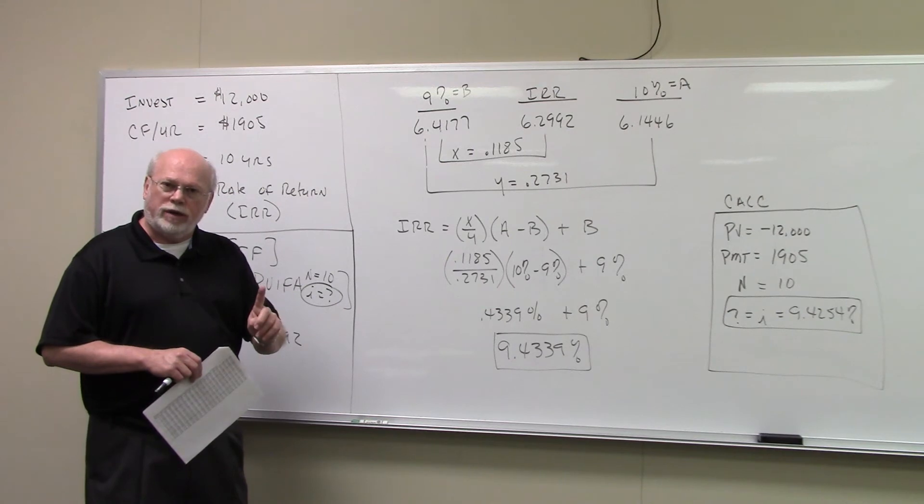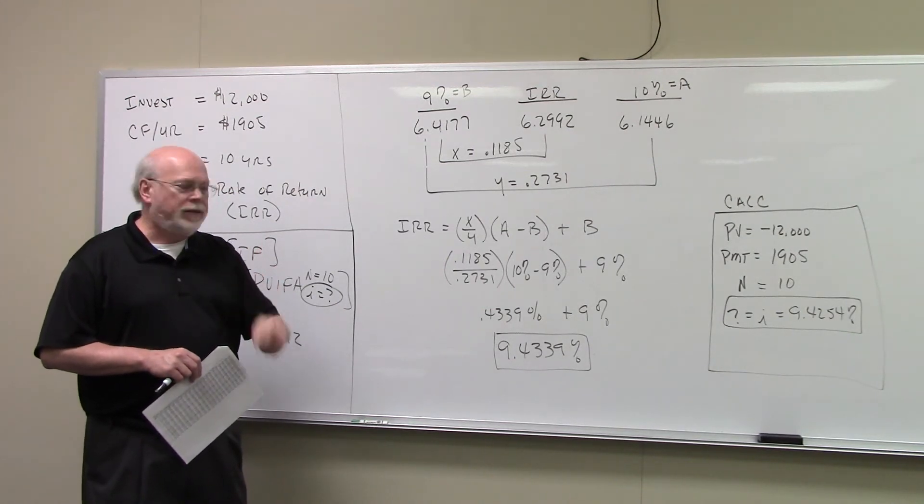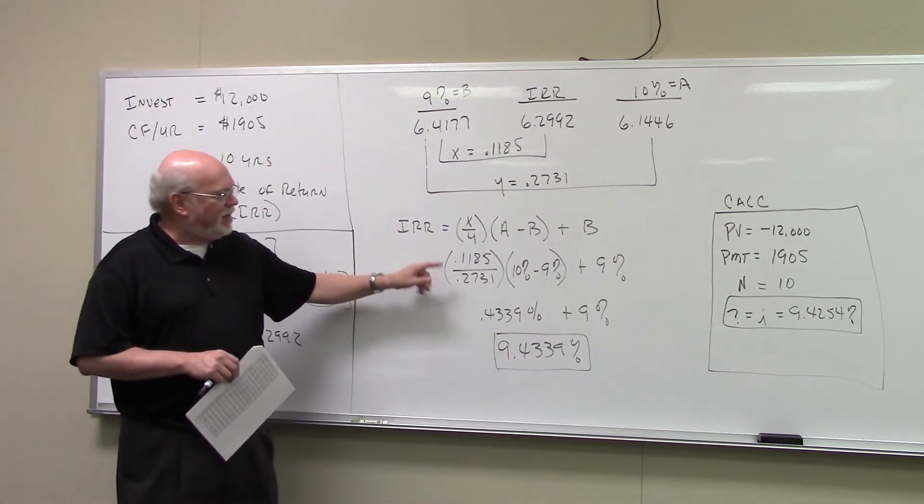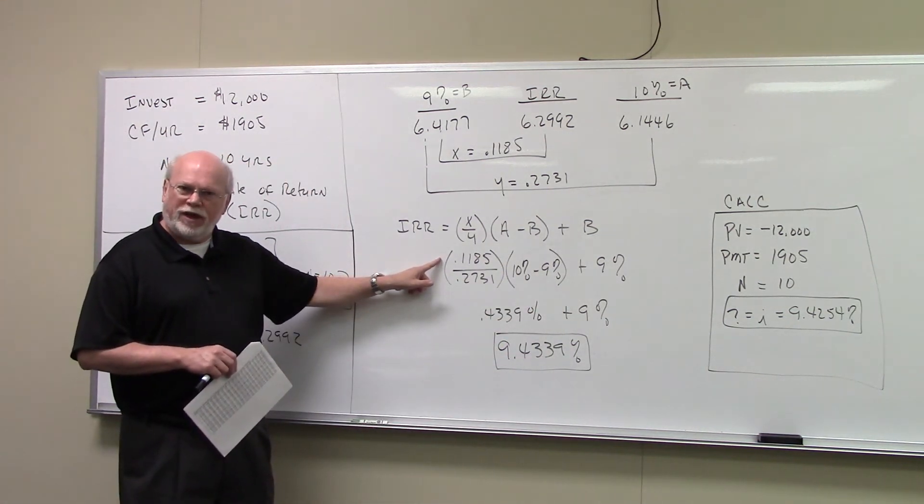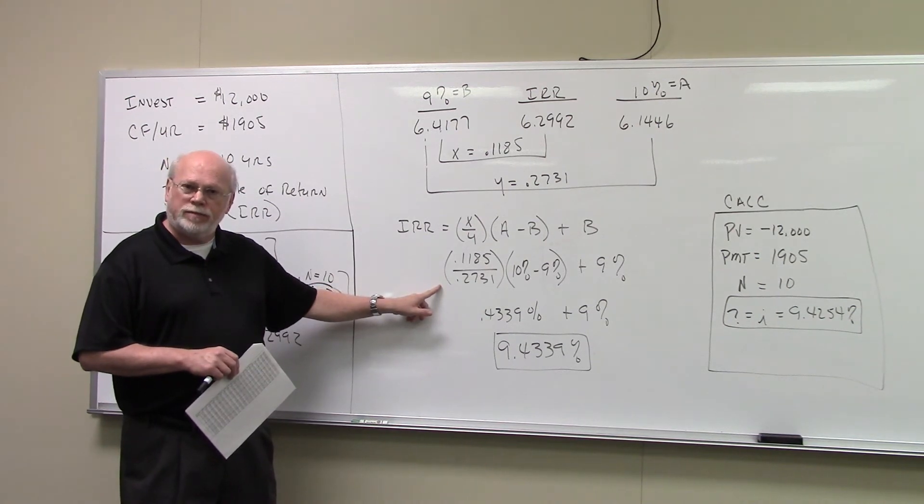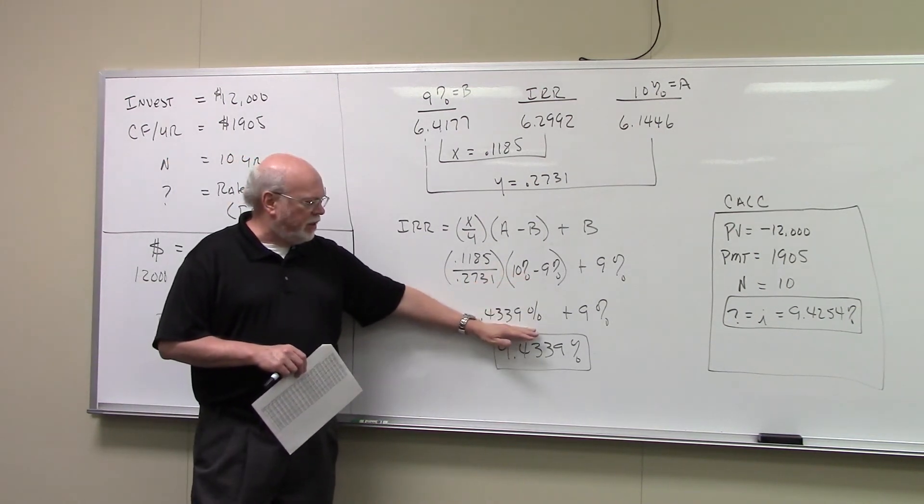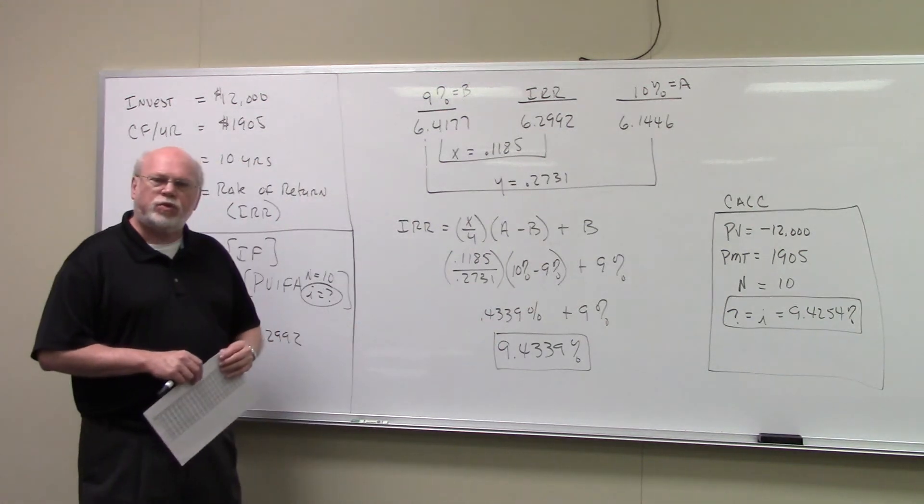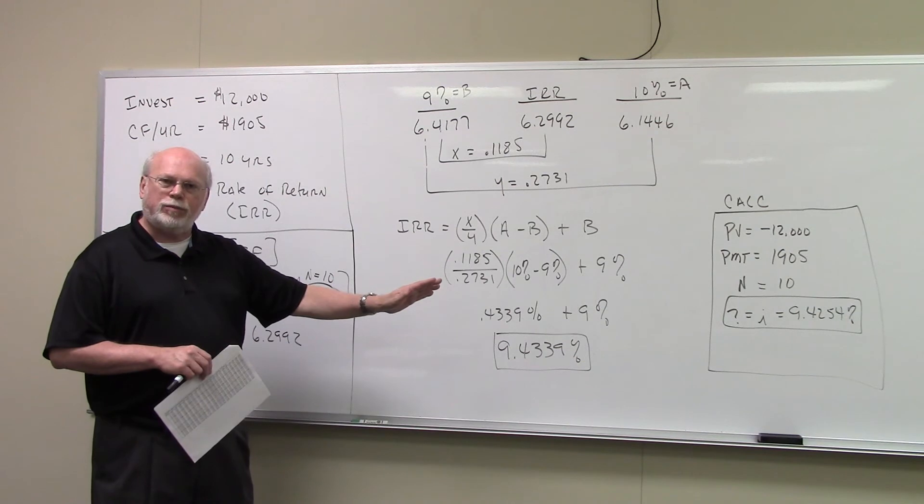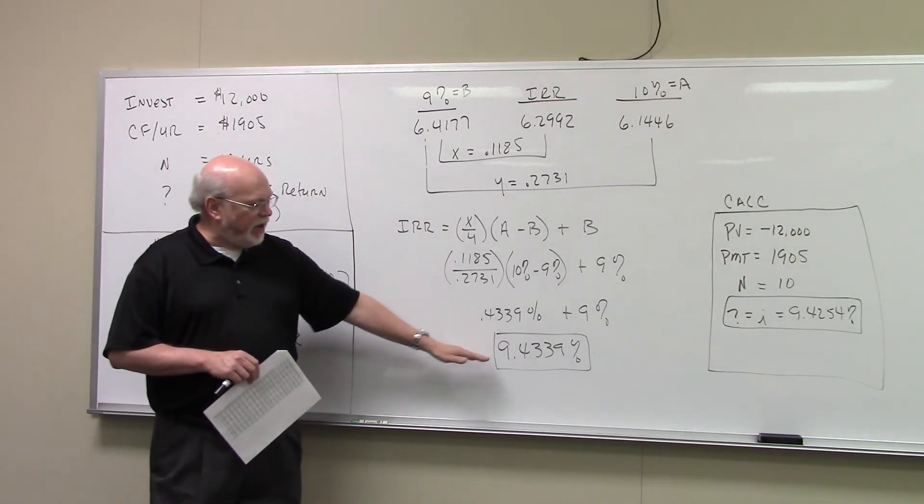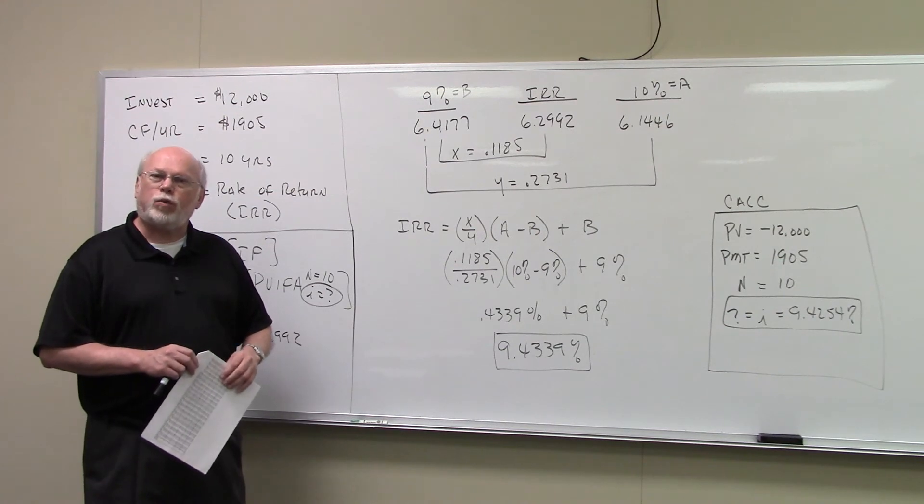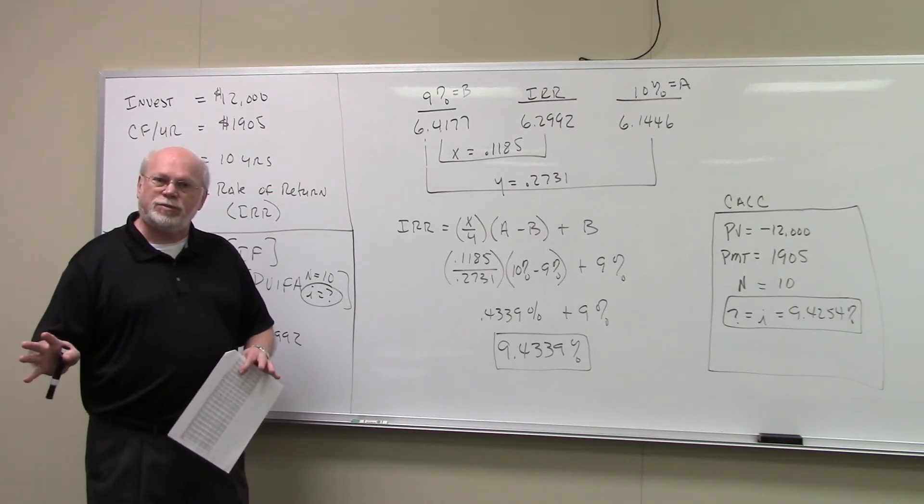Don't use 0.01, just 1. And then we're going to add that to 9 percent. And indeed, if you take 0.1185 divided by 0.2731 and multiply it by 1 percent, you get 0.4339 percent. And we're going to add that to 9 percent. And we get 9.4339 percent. And that's the rate of return, the internal rate of return on this investment.